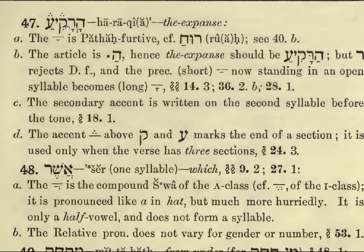HaRaQiang. This is a hidden patah — a furtive patah — just like in Ruach. And so this Qiang is one syllable. This is the only proper vowel. HaRaQiang: the expanse, the firmament, the partition, the division — however you want to translate it. The article is Ha, followed by a Dagesh Forte. But since the expanse would be HaRaQiang, the Resh rejects the Dagesh Forte — we can't put a Dagesh Forte into a Resh.